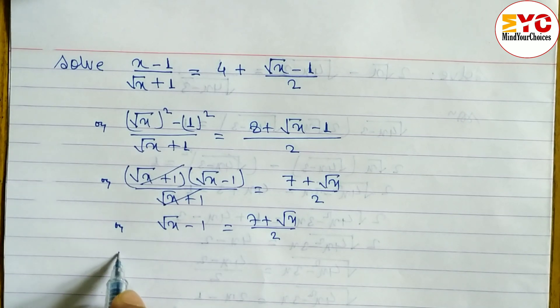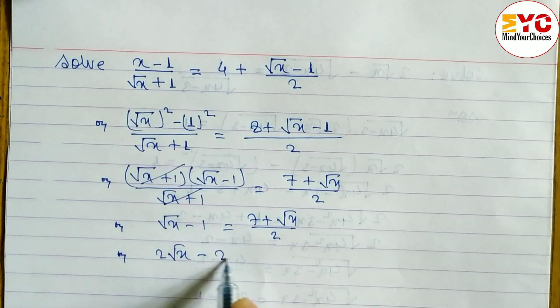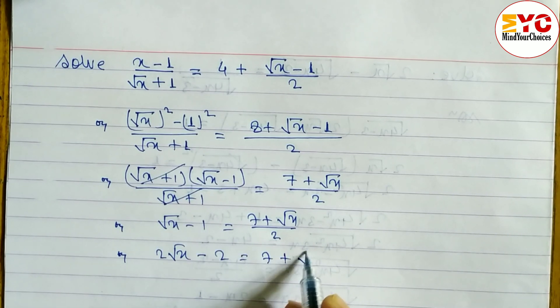Now we cross multiply. 2 times (√x - 1) gives us 2√x - 2 = 7 + √x.